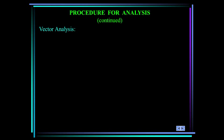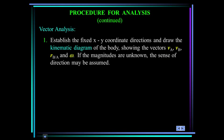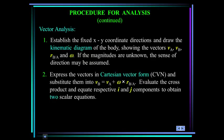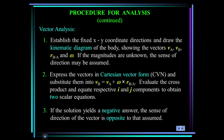Procedure for analysis: First, establish a fixed xy coordinate system. Draw the kinematic diagram showing vectors v_A, v_B, r_{B/A}, and ω. If magnitudes are unknown, assume a sense of direction. Express the vectors in Cartesian form (i, j, k) and substitute into the equation. Evaluate the cross product and equate respective i and j components to get two scalar equations. A negative answer means the assumed direction is opposite.